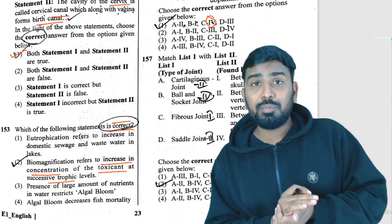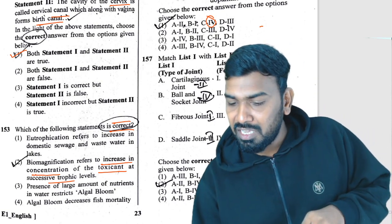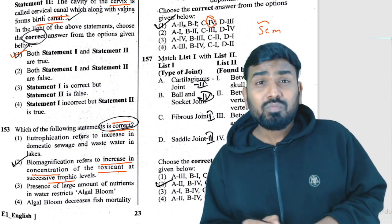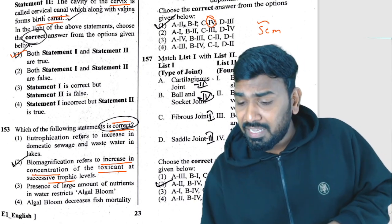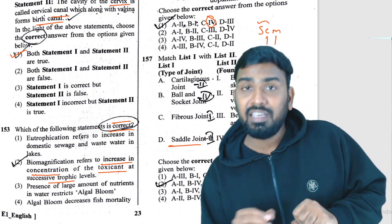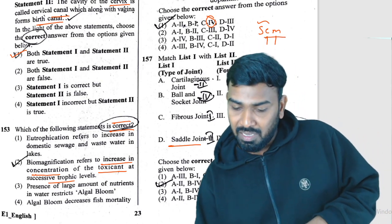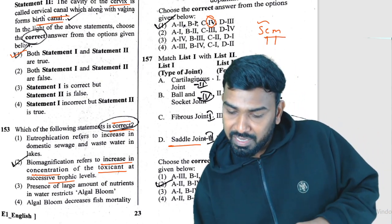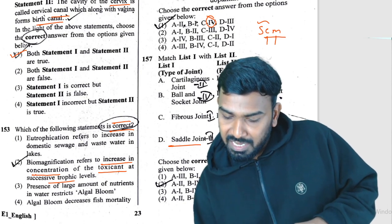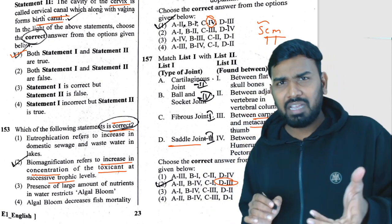Question 157 is about joints. Remember the mnemonic SCM: S = saddle joint at carpal-metacarpal. Looking at the options, saddle joint between carpals and metacarpals is D3, and D3 appears at only one place — so the answer is confirmed from the mnemonic alone.